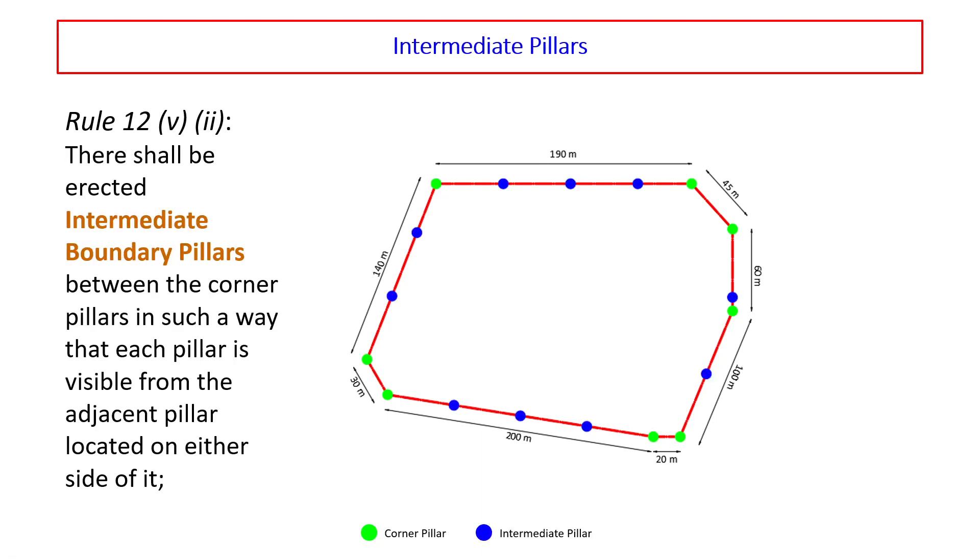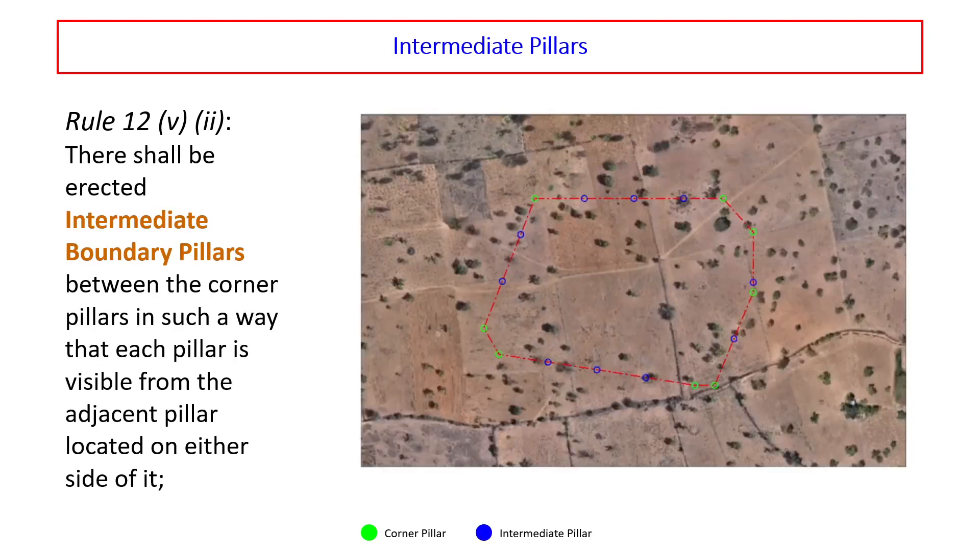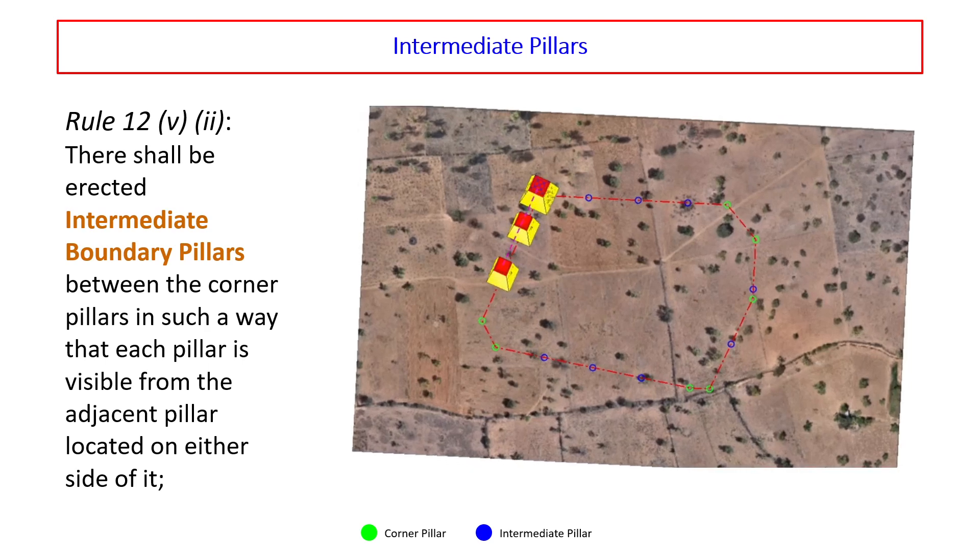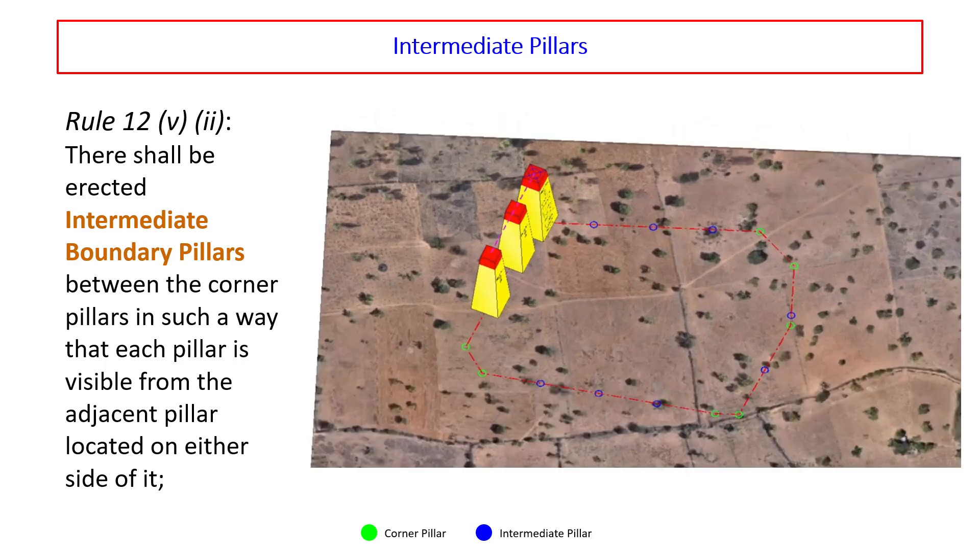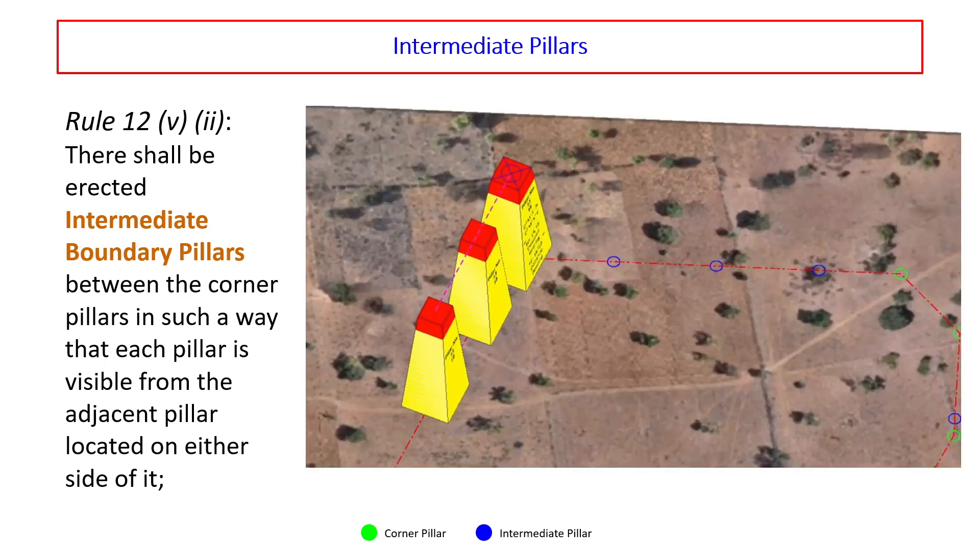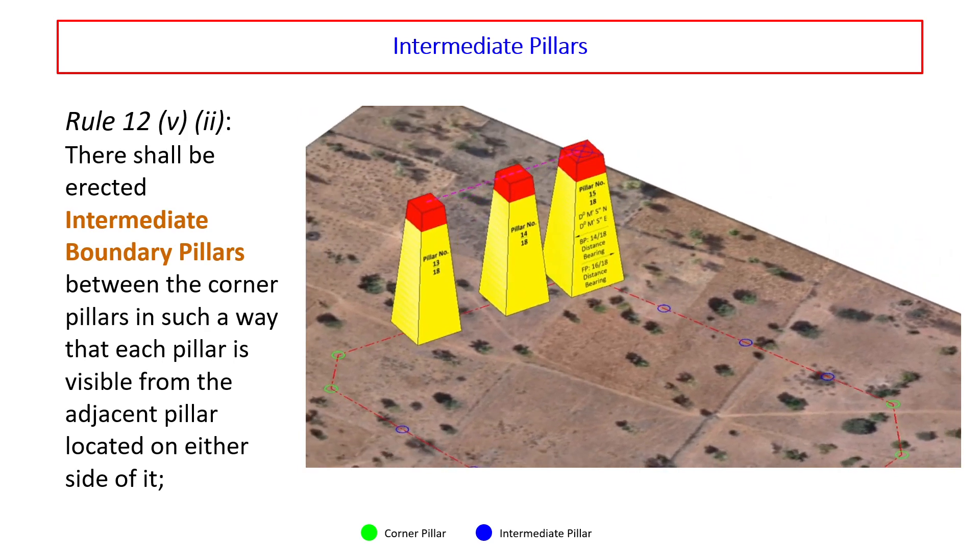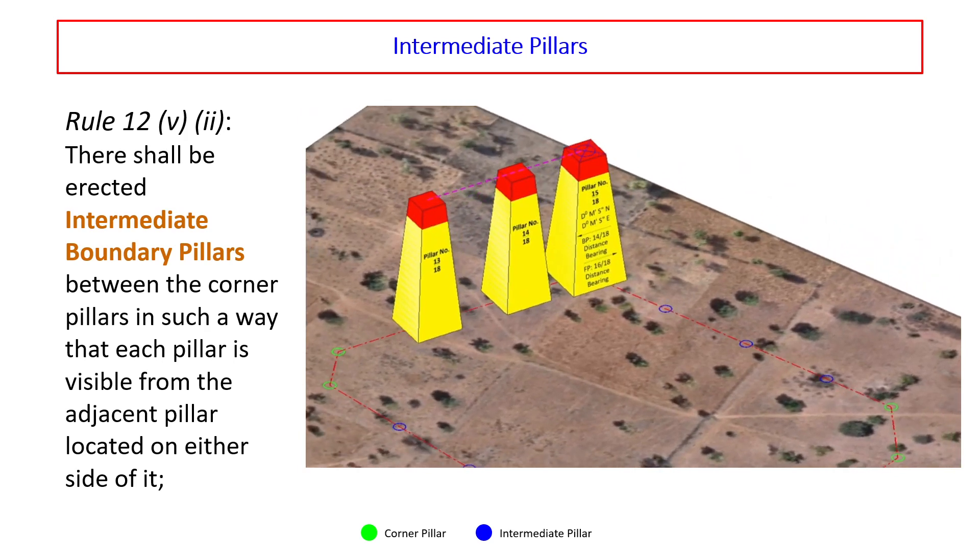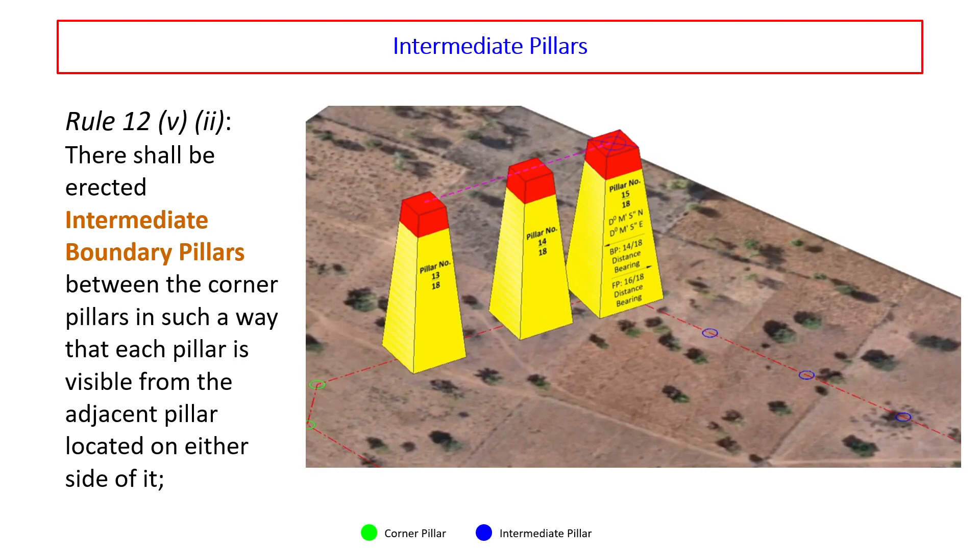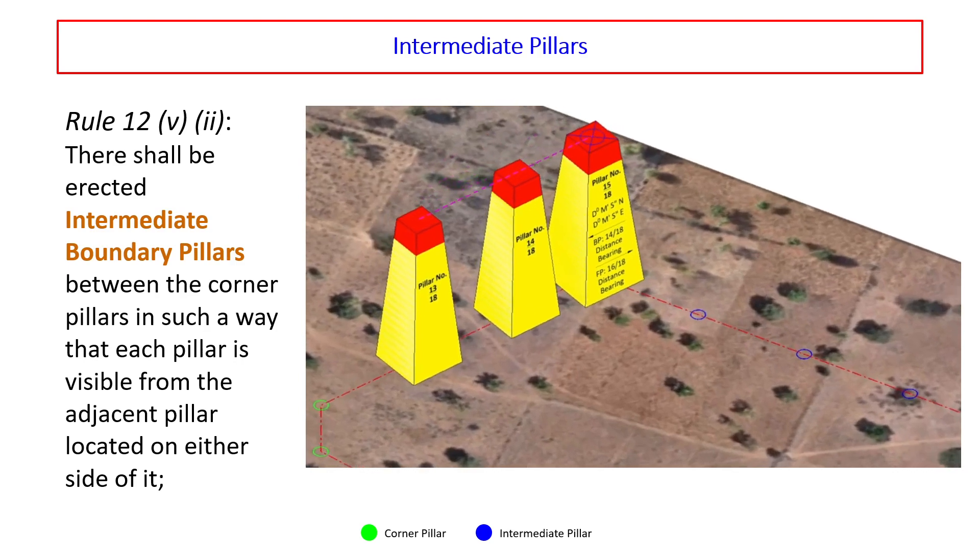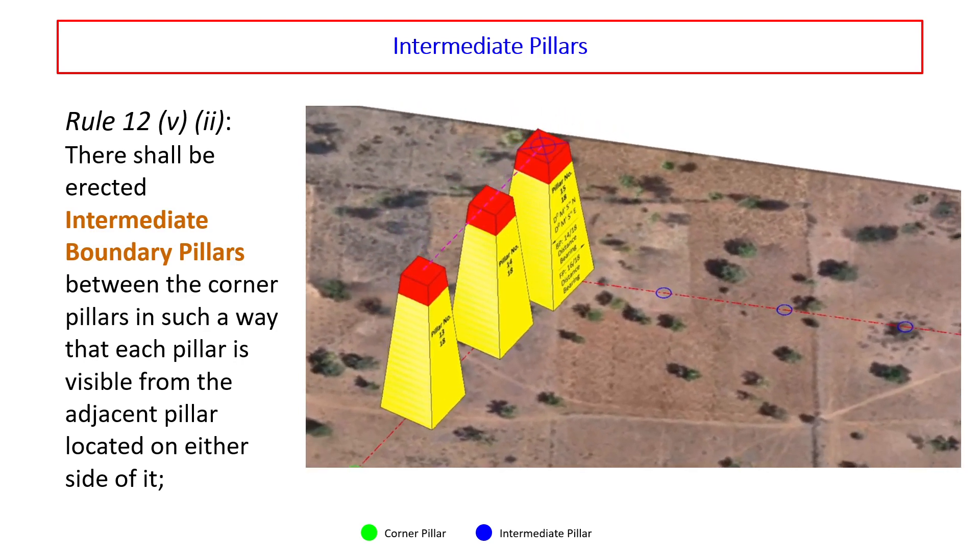Where to construct intermediate pillars? There shall be erected intermediate boundary pillars between the corner pillars in such a way that each pillar is visible from the adjacent pillar located on either side of it. In this example, pillar number 13 and 15 are on either side of pillar number 14. So, from pillar 13 or pillar 15, pillar 14 should be visible.